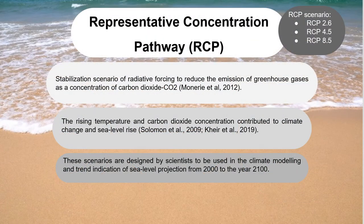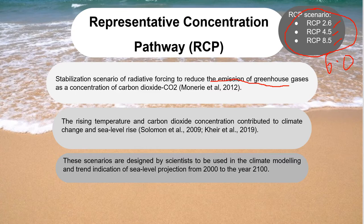According to some references, climate change and sea level rise activity are more developed in this century due to the increasing temperature and concentration of carbon dioxide in the atmosphere. RCP is a radiative forcing pathway to reduce the emission of greenhouse gases in the environment. There are four scenarios of RCP: 2.6, 4.5, 6.0, and 8.5. Based on the study of the five journals, only three of these RCP scenarios were used in their research. RCP scenarios are designed for the climate modeling system and to indicate sea level projection in the 21st century.